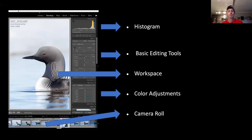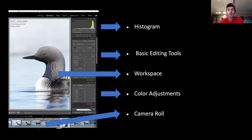When you open Adobe Lightroom or any Camera Raw editing software, you'll see a histogram graph at the top, then your list of basic editing tools — exposure, contrast, highlights, shadows, whites, and blacks. The workspace shows the photo you're editing, there are color adjustments, and the camera roll at the bottom shows the series of all your photos so you can quickly compare them when deciding which is your favorite.